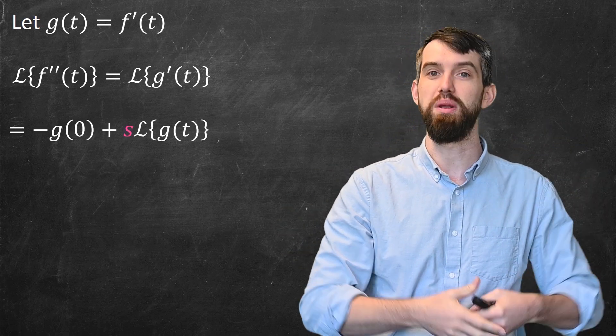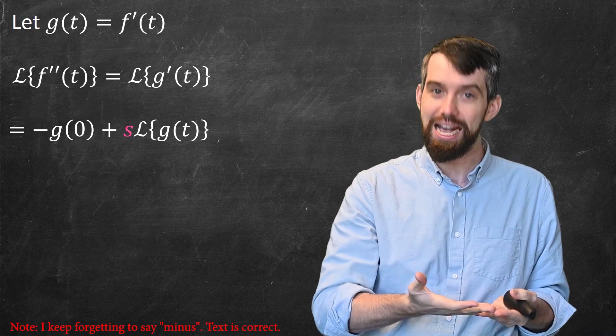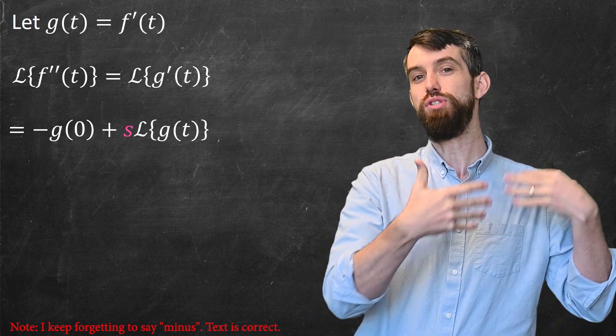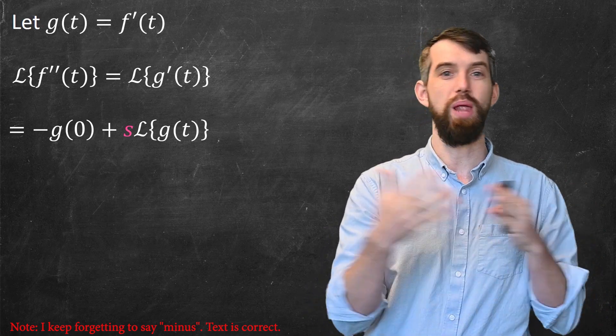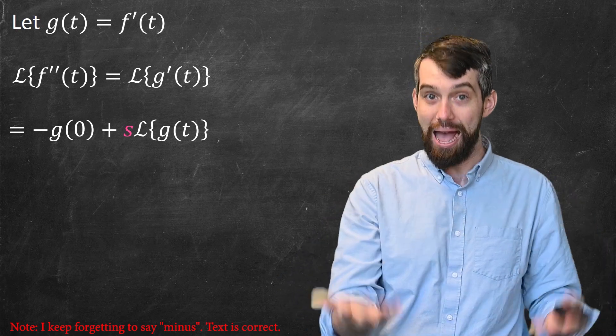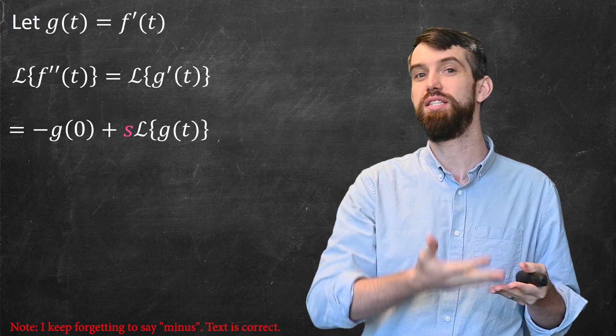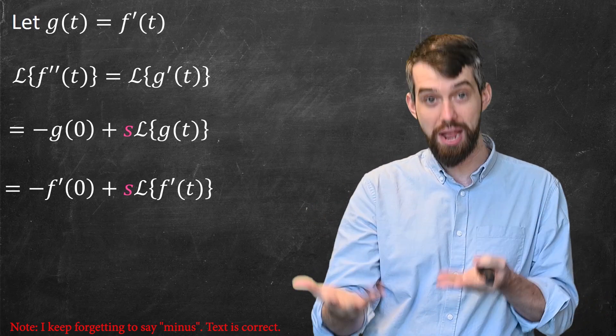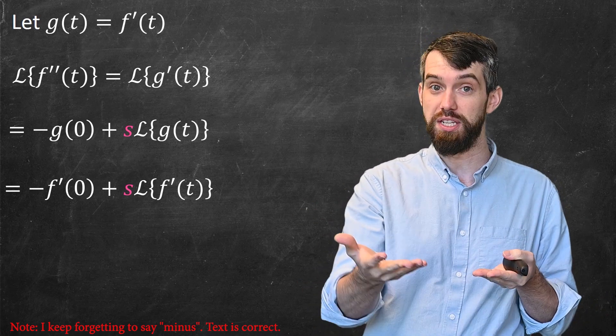And so plugging in that formula, it was -g(0) plus s times the Laplace transform of g. So I've used g to apply my previous formula, but now I'm no longer interested in it. So I'm going to rewrite it back in terms of f. So g is the same thing as f'. So I'll rewrite this as -f'(0) and then s times the Laplace transform of f'(t).